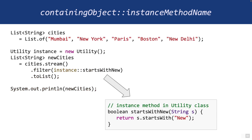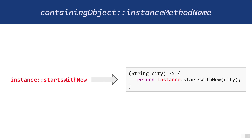The second type of method reference is containingObject::instanceMethodName. Here, startsWithNew is not a static method — it's an instance method in the utility class. You create a utility object, and then call utility::startsWithNew in the filter. This is also intuitive because the parameter of the lambda and the parameter of startsWithNew is exactly one-to-one.